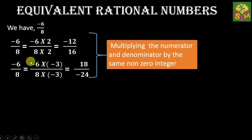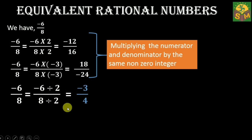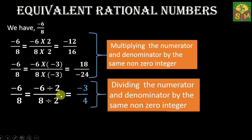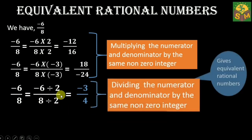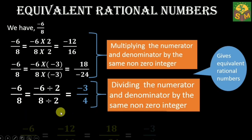So if the numerator and denominator of a rational number are multiplied or divided by a non-zero integer, we get a rational number which is said to be equivalent to the given rational number.